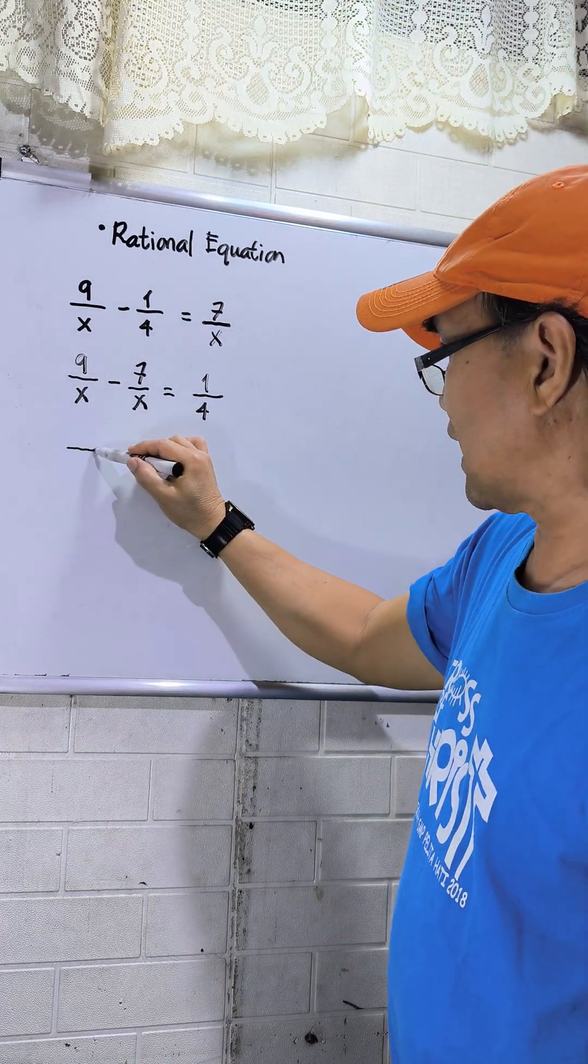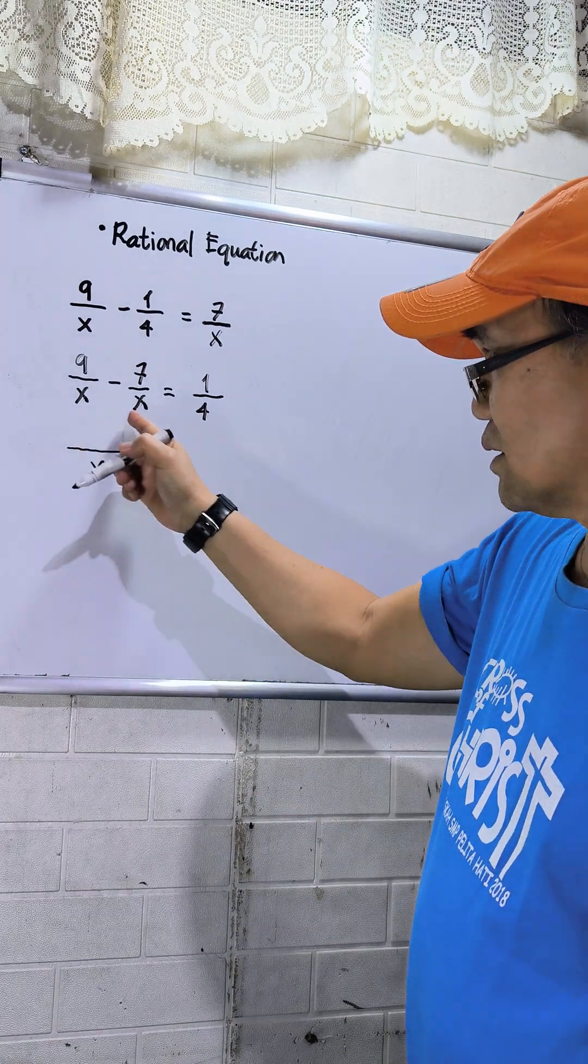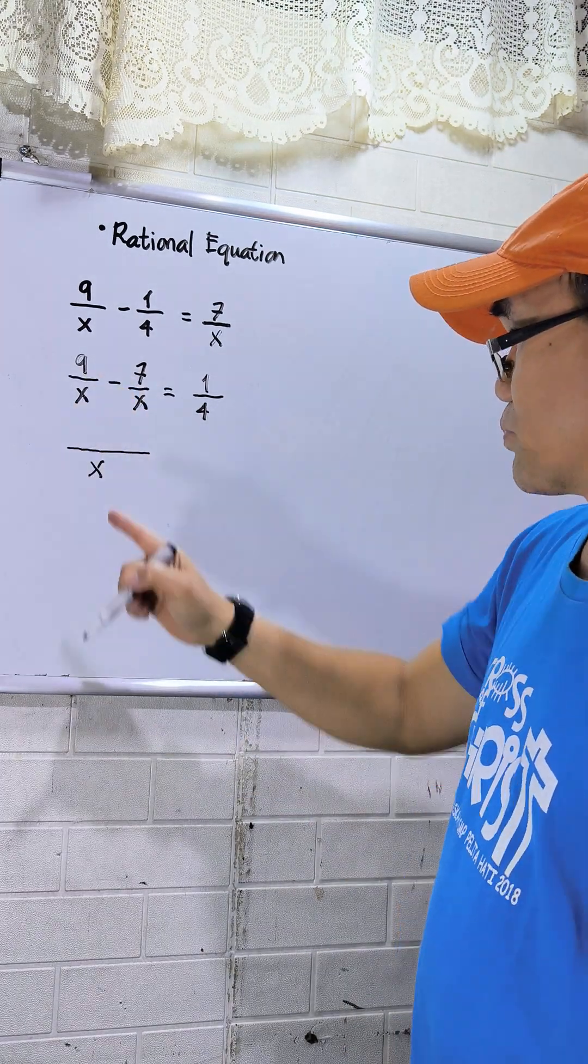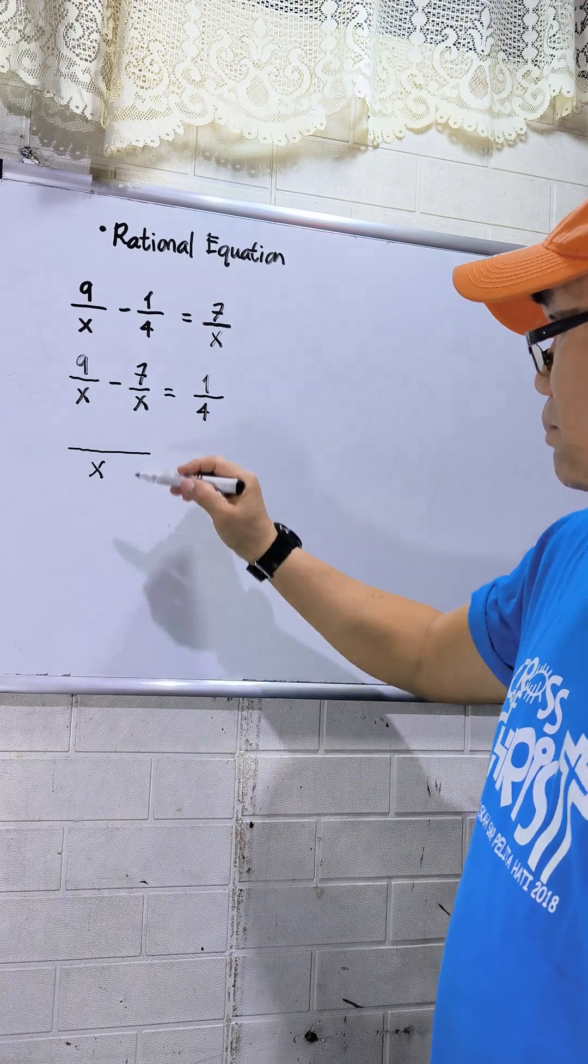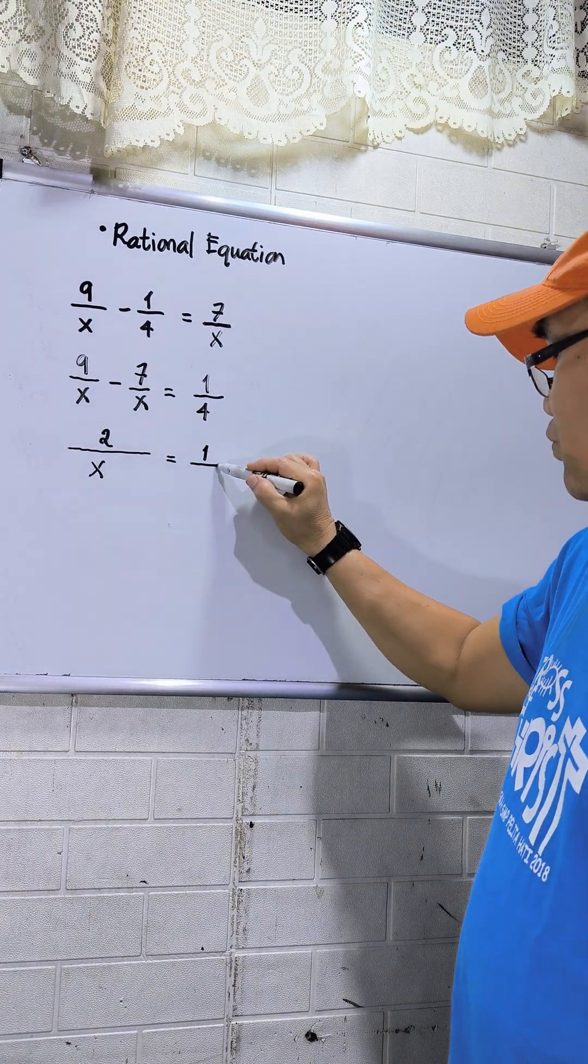Then LCD at the left side, so it should be x. And then you can subtract now 9 minus 7. That will be positive 2. Then equals 1 over 4.